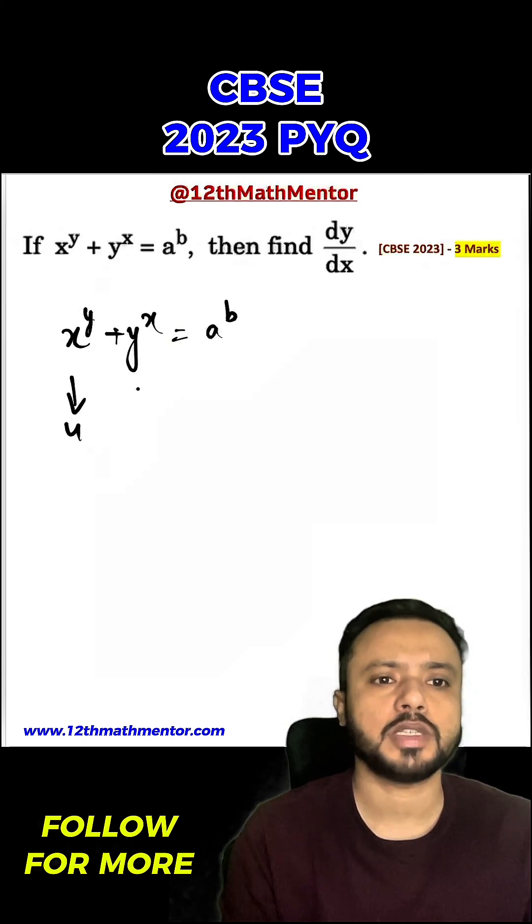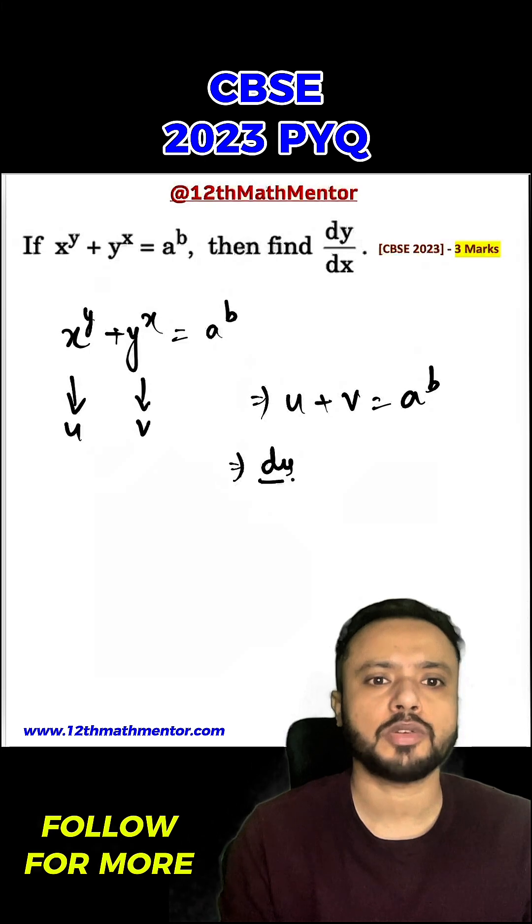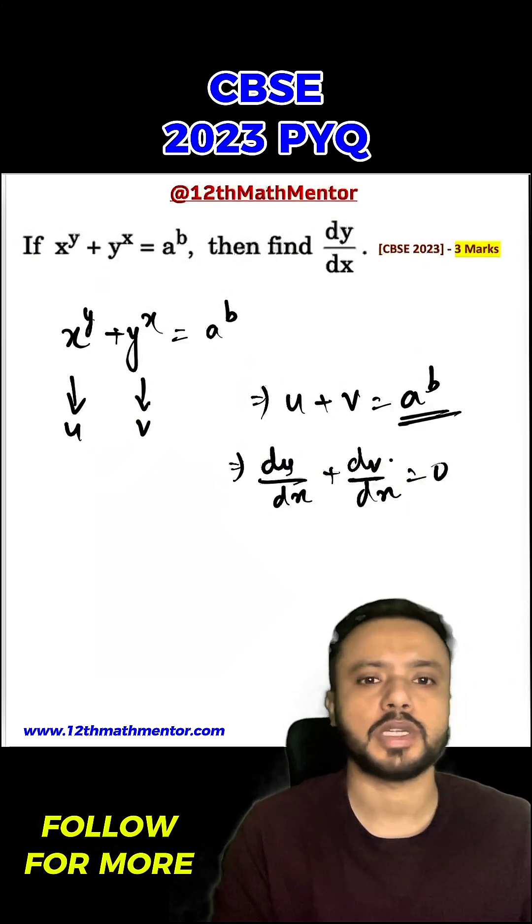So to solve this, I am going to assume this function as u and this as v. So I can say that u plus v is equal to a raised to the power b. So now when I will differentiate both sides with respect to x, I will get du upon dx plus dv upon dx equals to 0 because a raised to the power b is a constant.